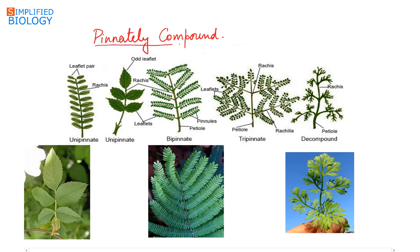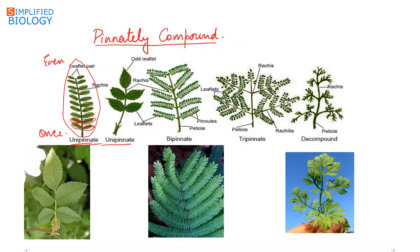Pinnately compound leaves can be further divided into types according to the number of times the lamina is broken up. First is unipinnate, where the lamina is broken up only once to form leaflets. Unipinnate is further divided into two types based on the number of leaflets: if the number of leaflets is even, it is paripinnate; if odd, it is imparipinnate.